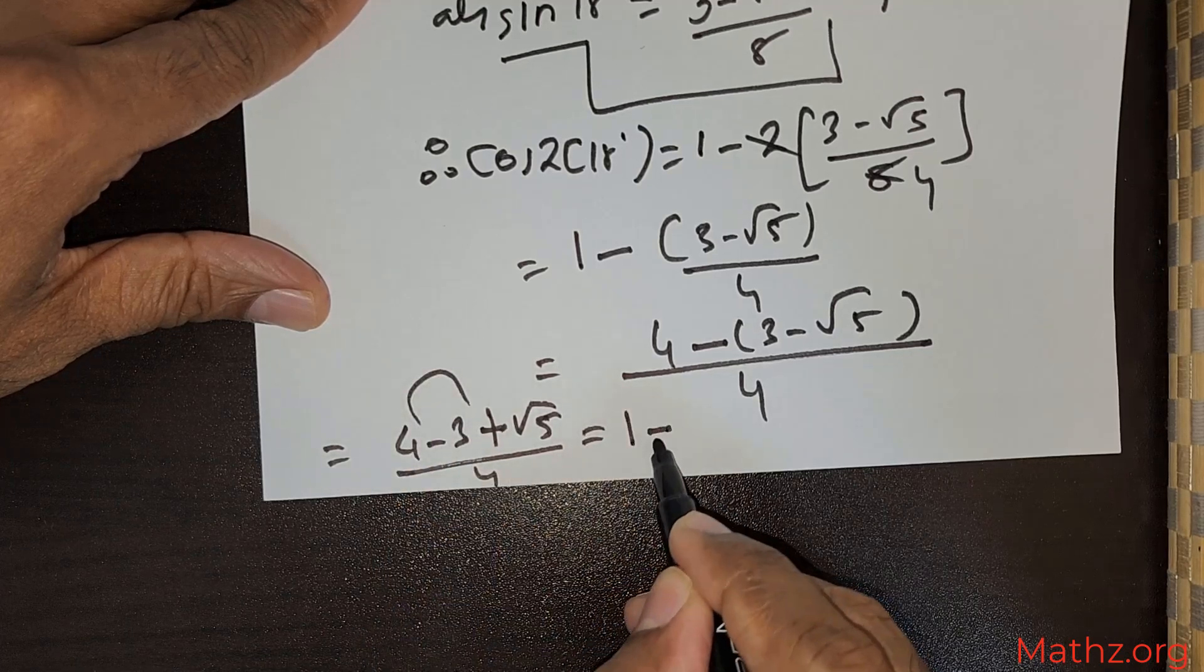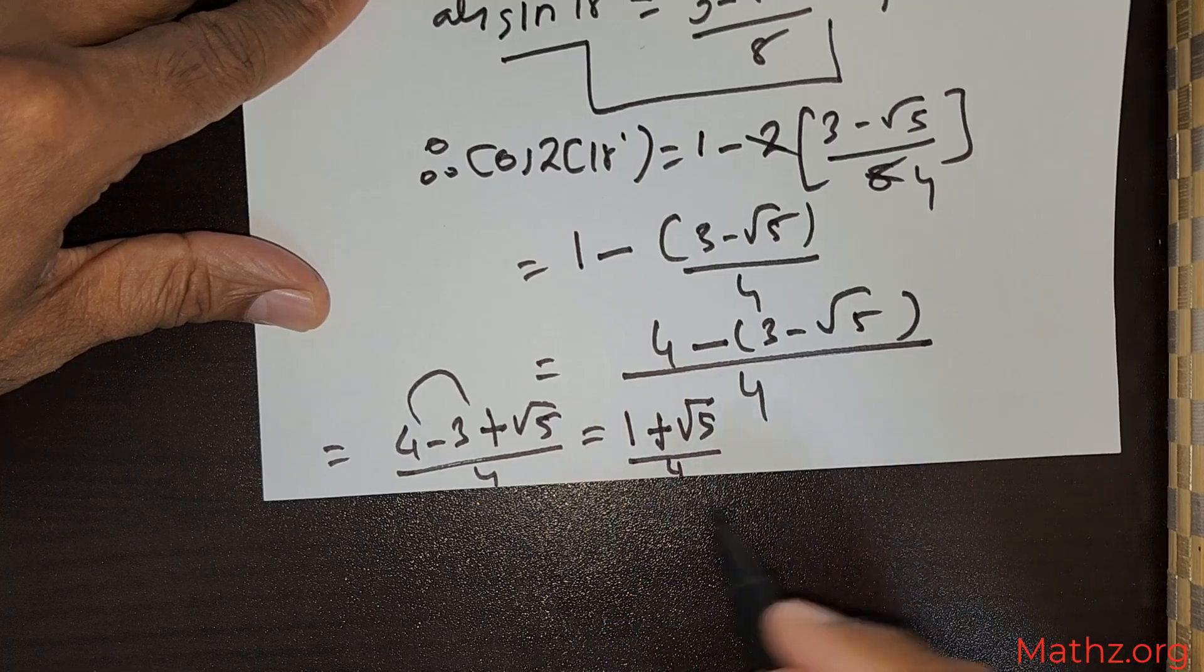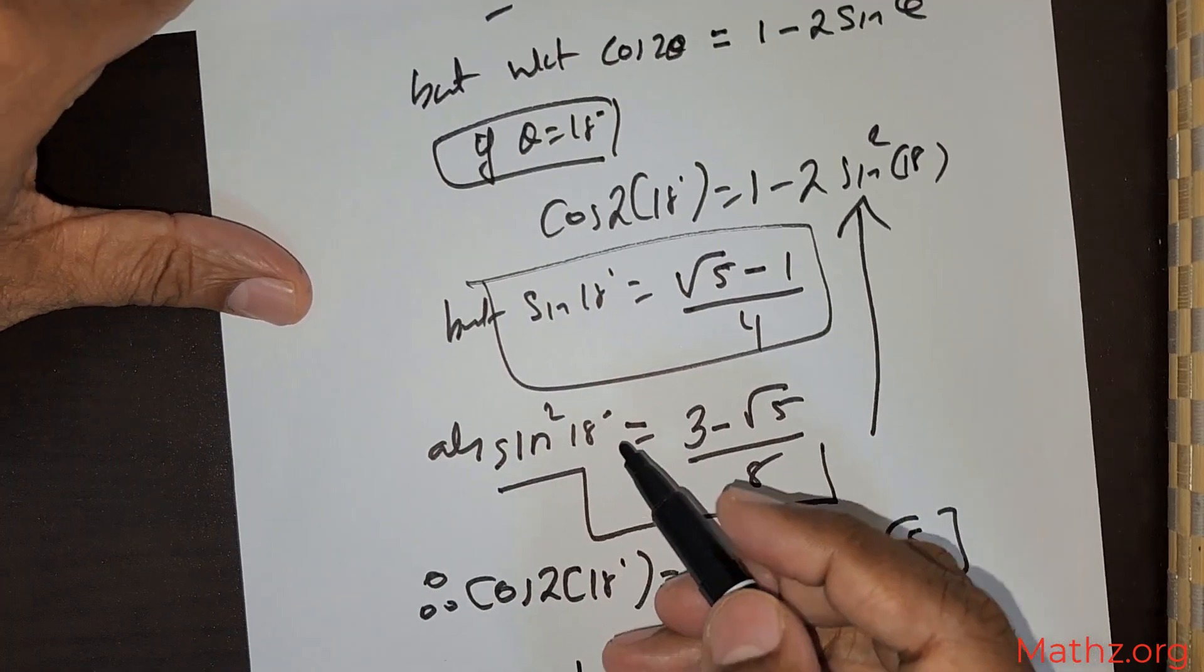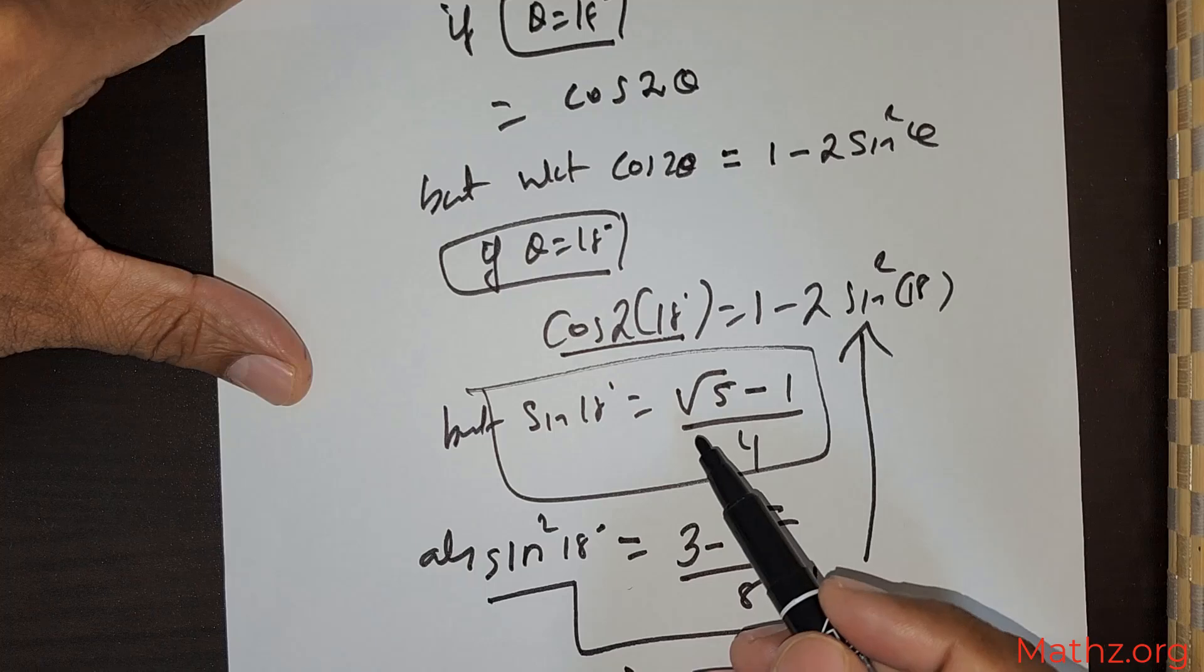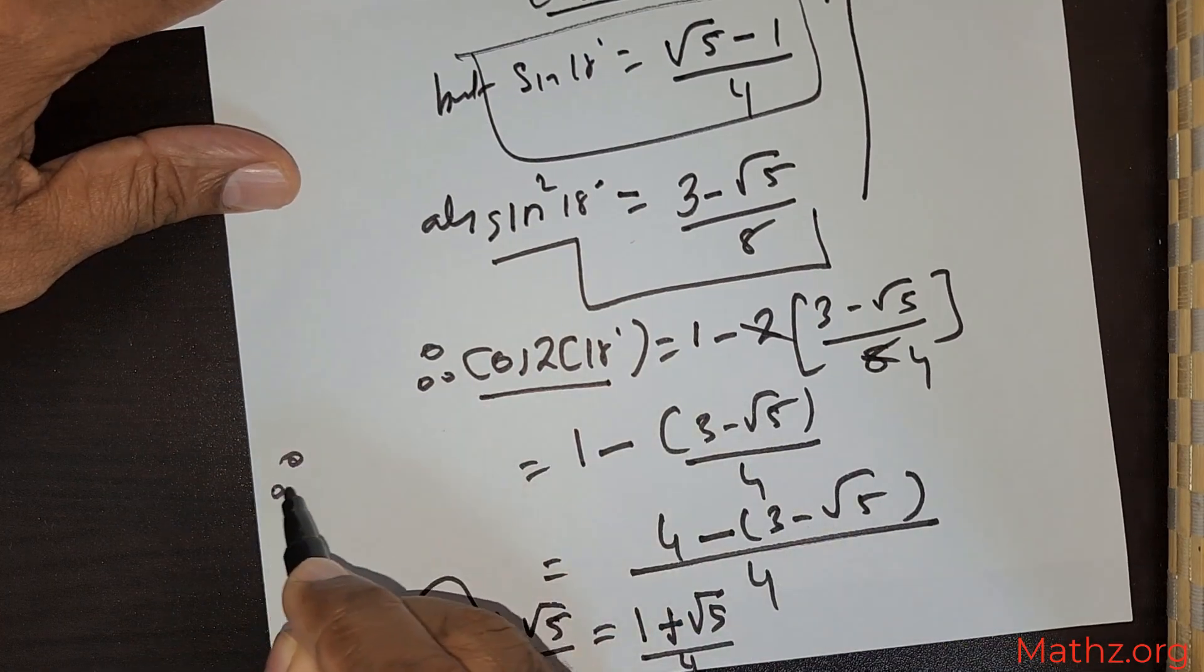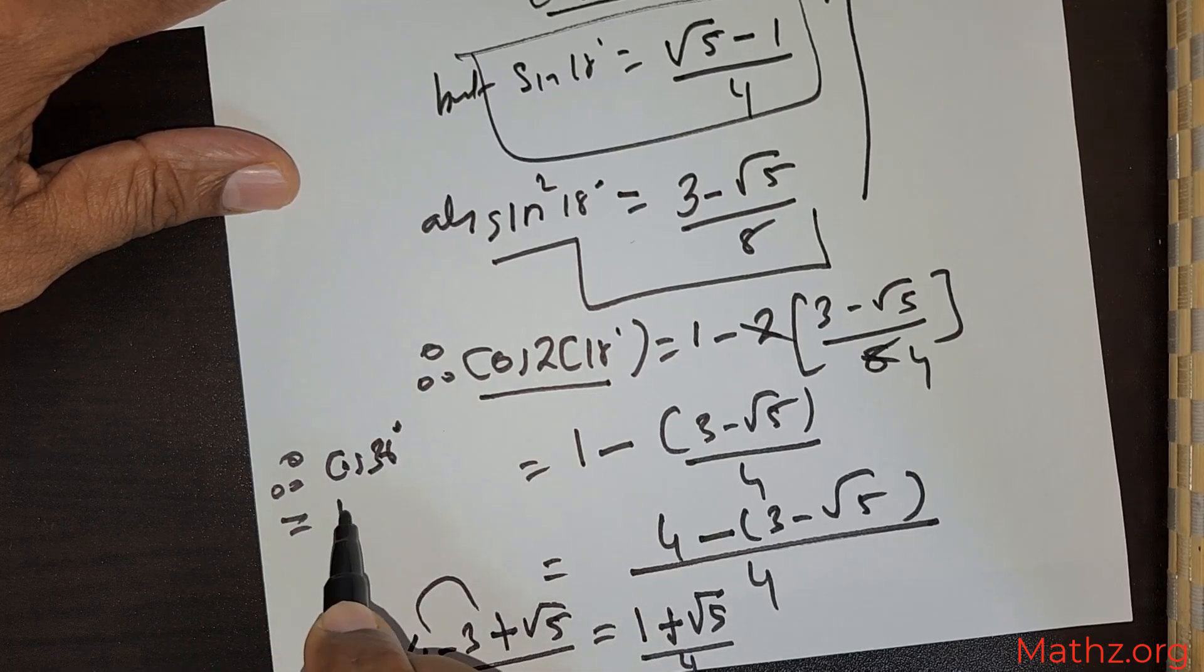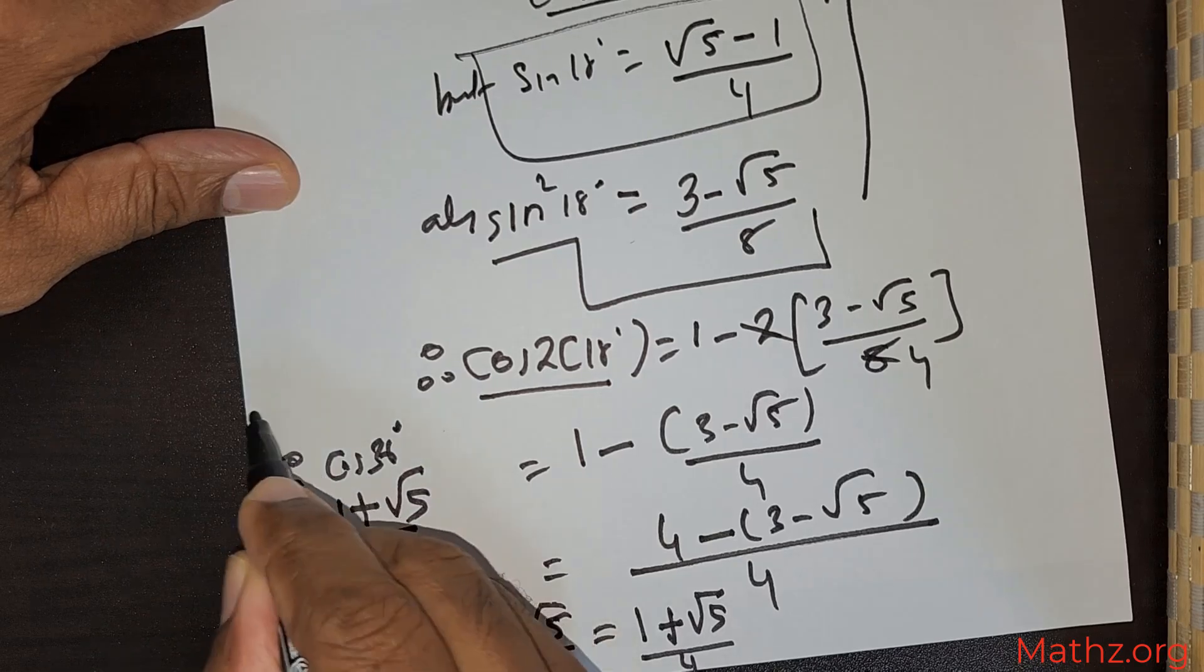You add these two, you get (1 + √5)/4. Now what is this? This is my cos 2θ, which is nothing but cos 36°. Therefore, I have found cos 36° = (1 + √5)/4.